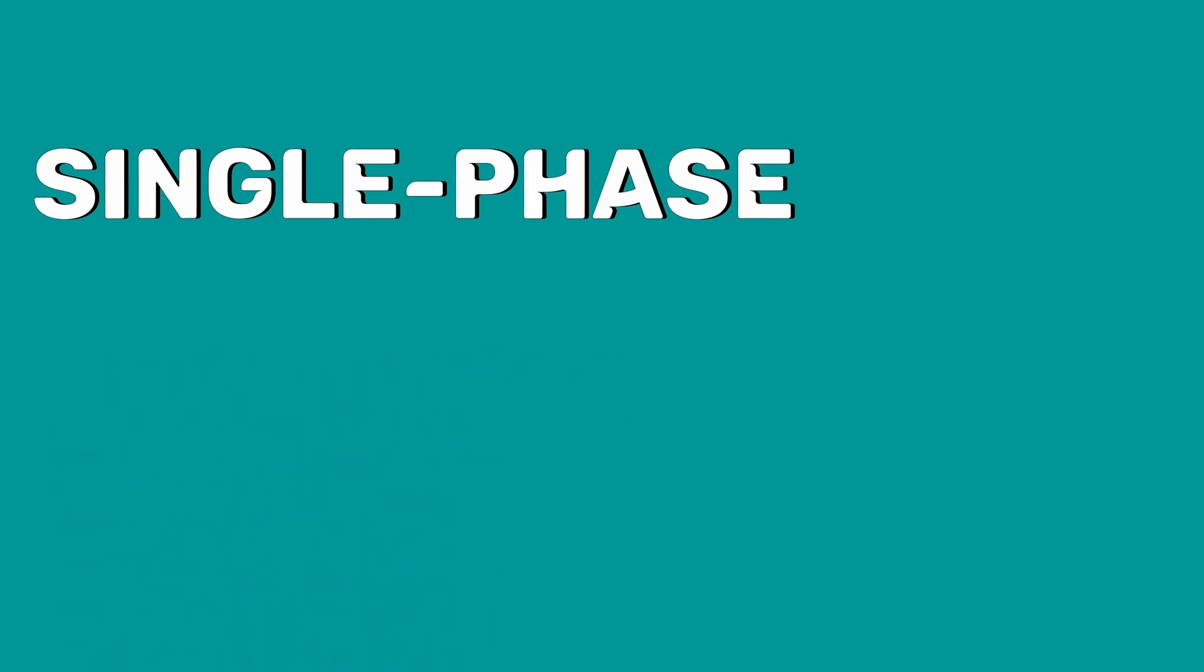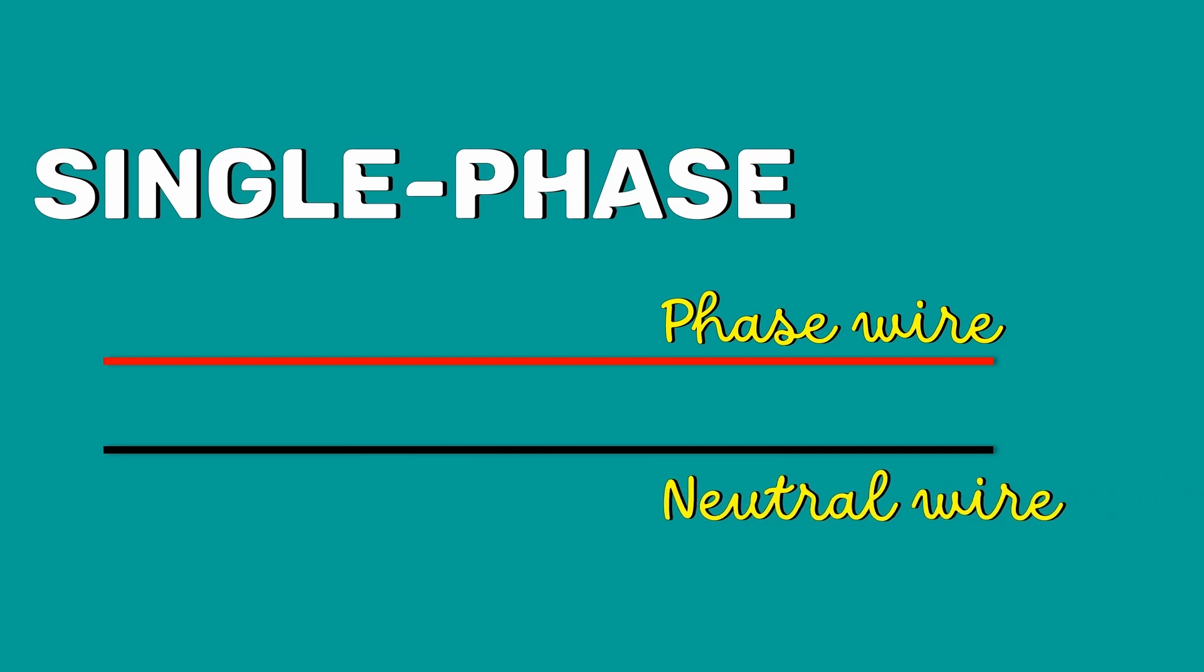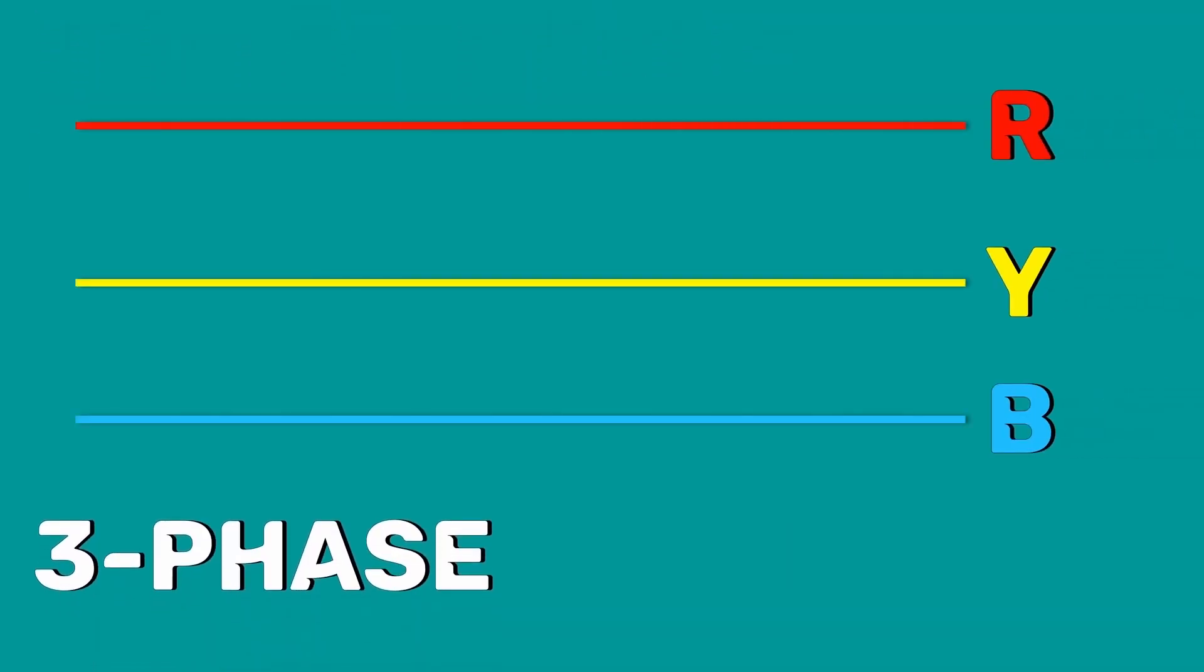Single phase power typically has one phase wire and one neutral wire. As the name indicates, three phase power has three phase wires.